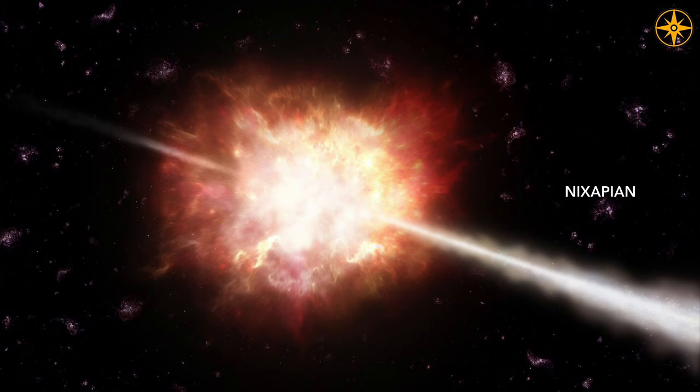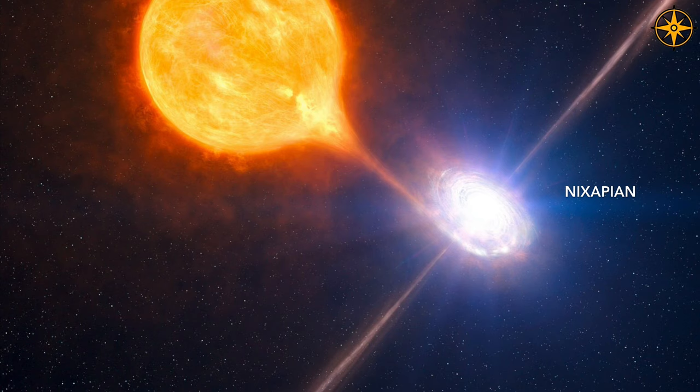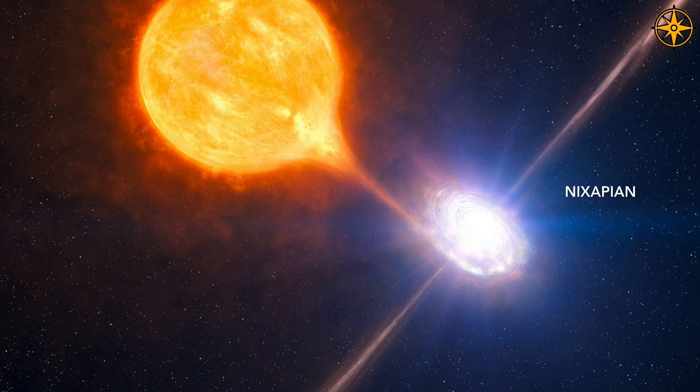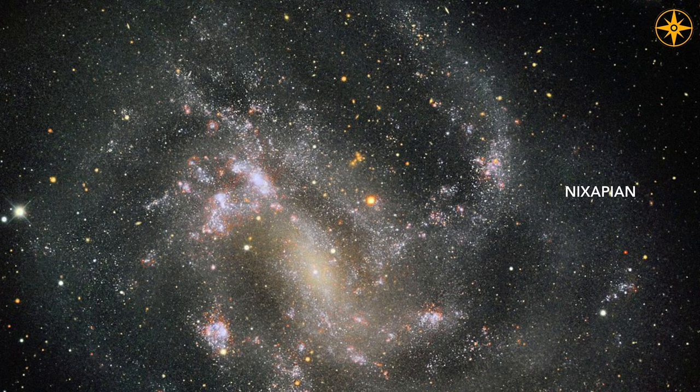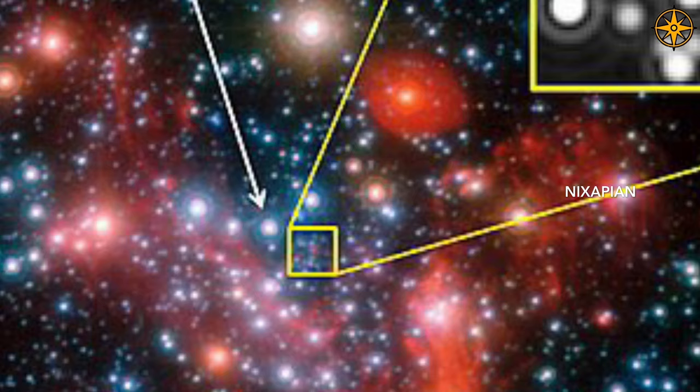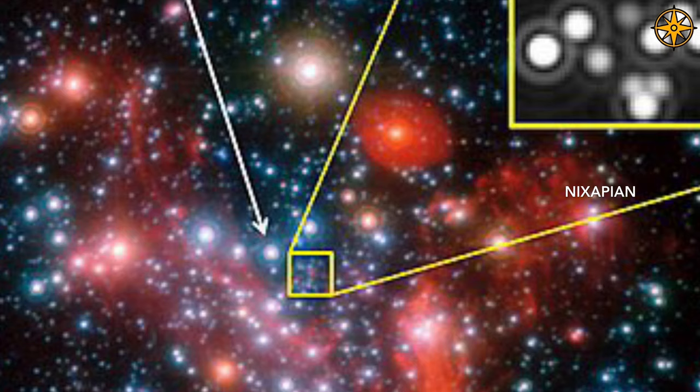A stellar black hole is one created when a large star collapses on itself in a supernova. It has 20 times the mass of the sun. A supermassive black hole lies at the center of every galaxy in our universe and has a mass of millions of suns put together. The supermassive black hole at the center of our Milky Way galaxy is known as Sagittarius A, and it has a mass of 4 million suns.